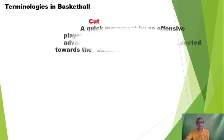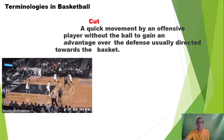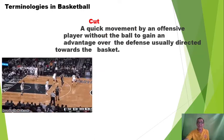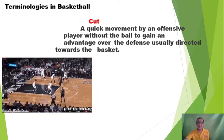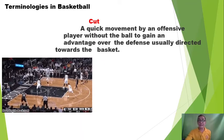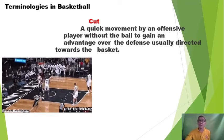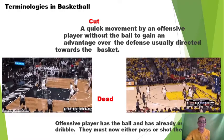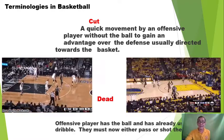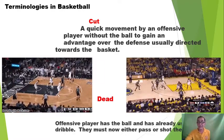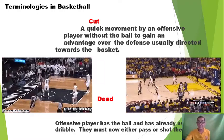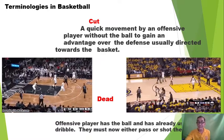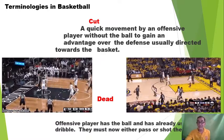And then the cut — it is a quick movement by an offensive player without the ball to gain an advantage over the defense, usually directed towards the basket. How about the dead? The dead is an offensive player who has the ball and has already used the dribble — they must now either pass or shoot the ball.